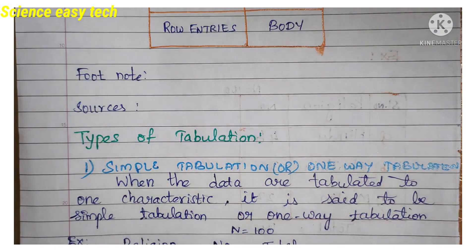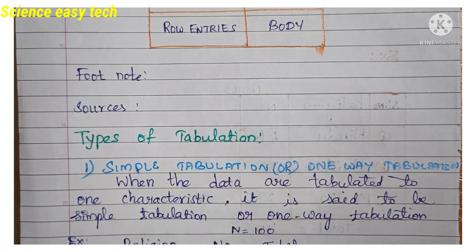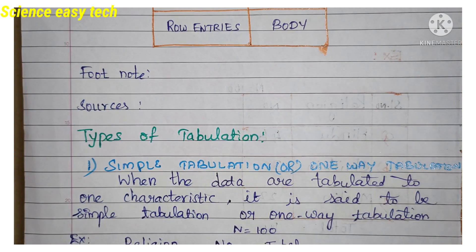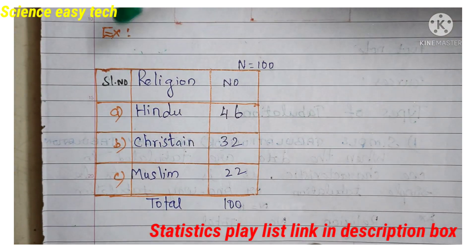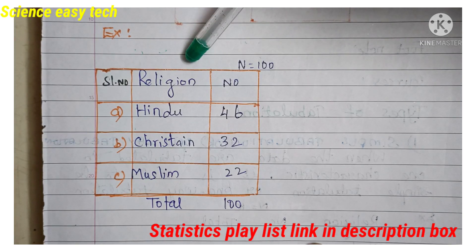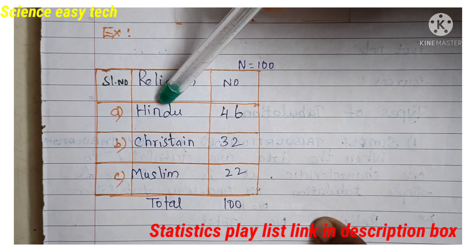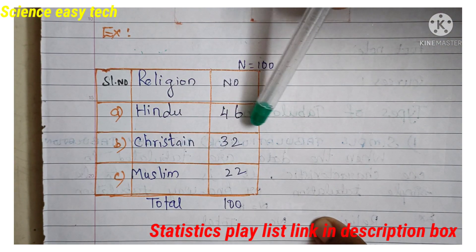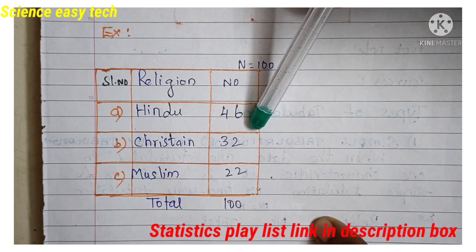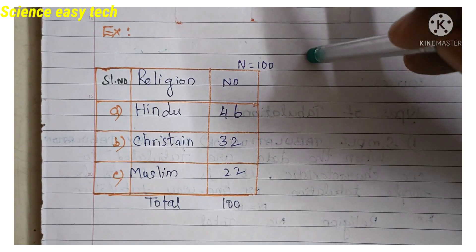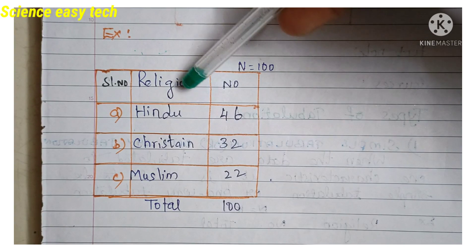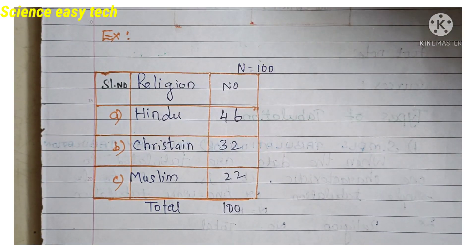In simple tabulation, you are representing only one characteristic, which is why it is also called one-way tabulation. For example: the table shows serial number, religion, and total number. Hindus are 46, Christians are 32, and Muslims are 22. Adding everything gives a total of 100 — N equals 100. This is an example of simple tabulation where only one characteristic, religion, is represented.